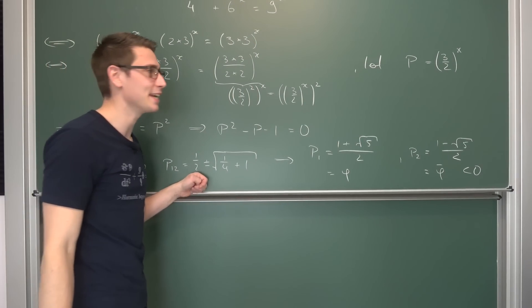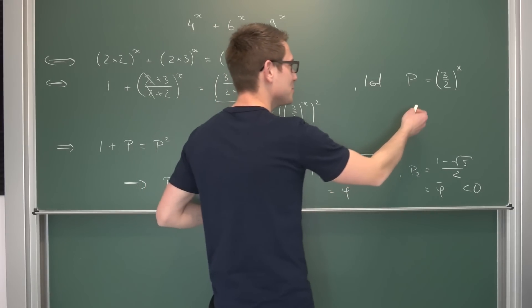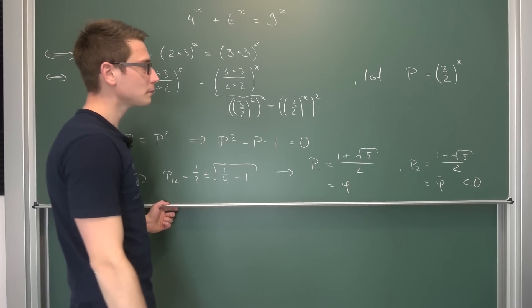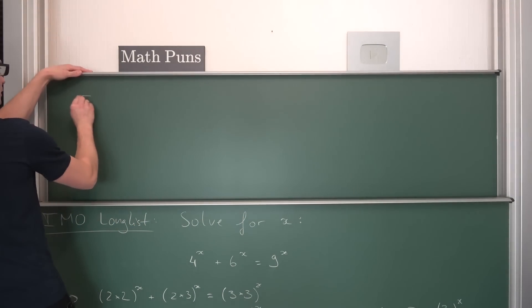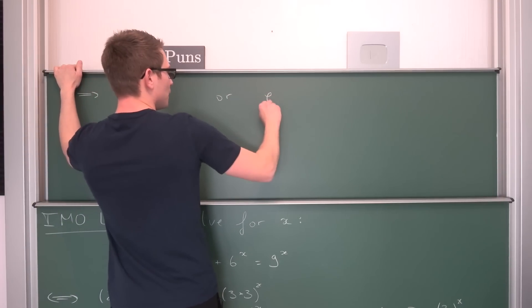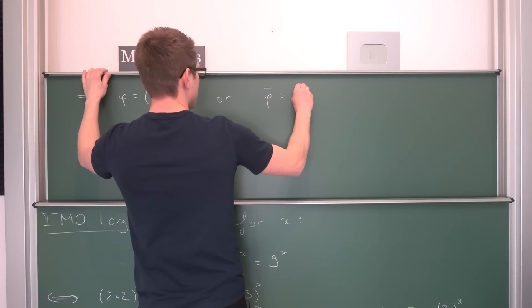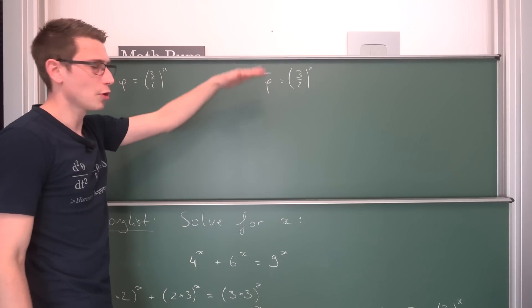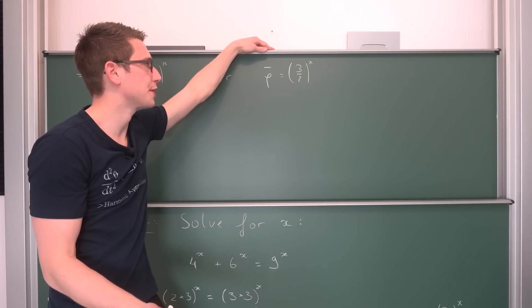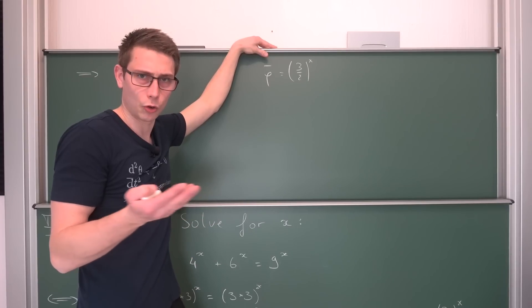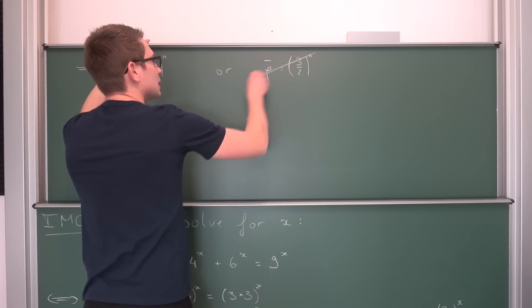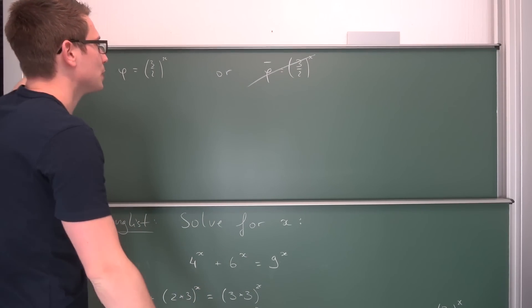Rho is equal to 3 over 2 to the x power. Meaning we can either have the golden ratio is equal to 3 over 2 to the x power. Or we have the second solution. The retarded little brother of the golden ratio is equal to 3 over 2 to the x power. Now, to solve for our x, what we need to do is take the logarithm. The logarithm is only defined in real numbers with positive arguments. Meaning this solution right here can be cancelled. We are not looking for complex solutions, only for the real solutions.